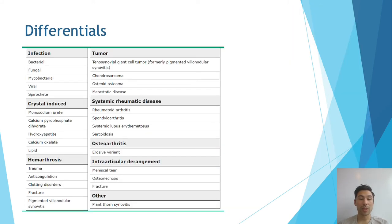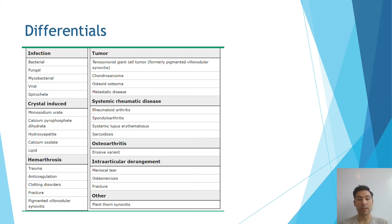Other differentials to consider besides infection: you want to consider tumour, which would be useful to exclude with imaging. Rheumatoid disease, such as rheumatoid arthritis, or other arthritides such as gout or pseudo-gout, which can be seen with crystals. Also consider whether the patient has had any trauma, which would explain the swollen joint.